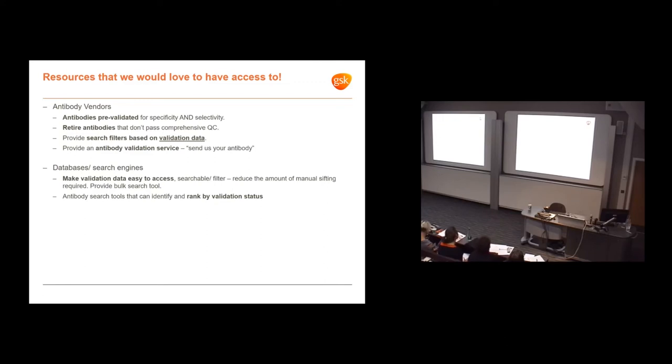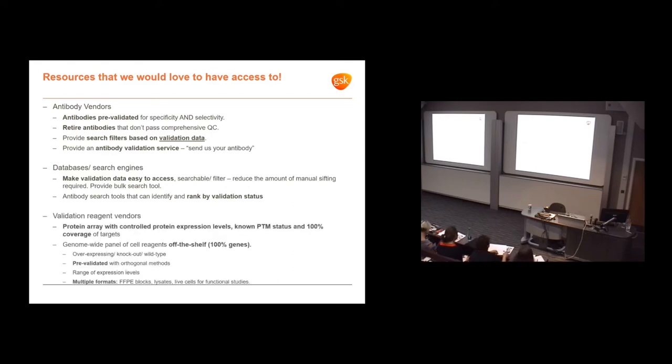For search engines, we want validation data made easy to access, searchable using filters, and bulk search tools because currently we have to do every single target one at a time. We want tools that identify and rank by validation status, not citation number. From validation reagent vendors, it would be ideal to get protein arrays with controlled protein expression levels for 100% coverage of protein targets - it's 80% at the moment. Getting cell reagents off the shelf, we don't want to spend months contracting. Sold off the shelf for a fixed fee makes everybody's life easier.